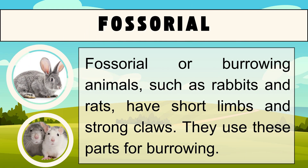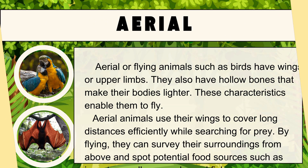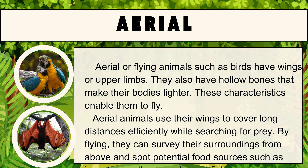Fossorial or burrowing animals, such as rabbits and rats, have short limbs and strong claws, which they use for burrowing. Aerial or flying animals, such as birds, have wings or upper limbs and hollow bones that make their bodies lighter — enabling them to fly. Aerial animals use their wings to cover long distances efficiently while searching for prey, surveying their surroundings from above to spot food sources such as insects, small mammals, and fish.